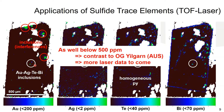We are still acquiring more laser data. However, one key difference compared to other orogenic gold systems — for example the Yilgarn — is that we observe really low arsenic concentrations, all well below 500 ppm. In contrast, in the Yilgarn Craton, many orogenic gold systems host up to 8% arsenic in pyrites, including arsenian pyrite and arsenopyrite, which are largely associated with gold precipitation there.